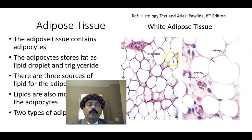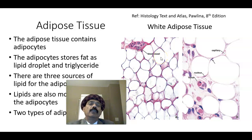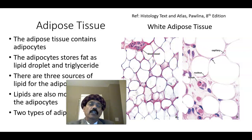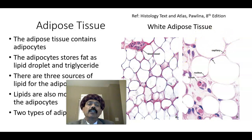There are three sources of lipid for the adipocyte. Lipid comes to the adipocyte from the intestine as chylomicron, it is also formed as triglyceride in the liver, and it is formed as triglyceride in the adipocyte itself.